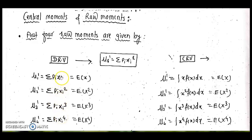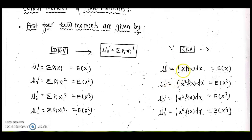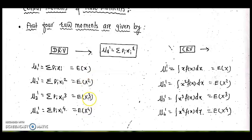Notice that the power of x increases for each successive raw moment. The same logic applies for the continuous random variable, where the notation is the same and x is multiplied by the function — x, x², x³, and x⁴ over the given interval. These correspond to E(x), E(x²), E(x³), and E(x⁴).